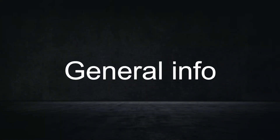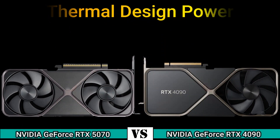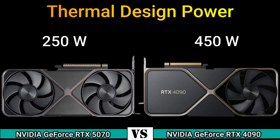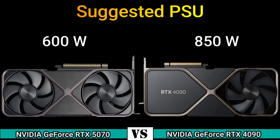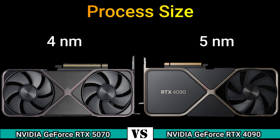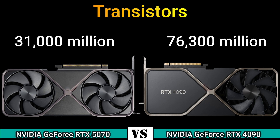General information: Thermal design power 250 W and 450 W. Suggested PSU: 600 W and 850 W. Process size: 4 nm and 5 nm. Transistor count: 10 billion and 76.3 billion.